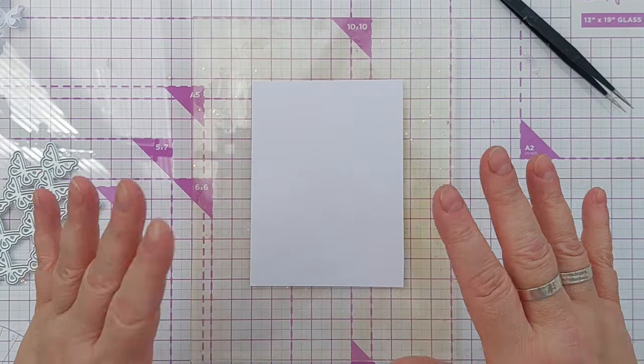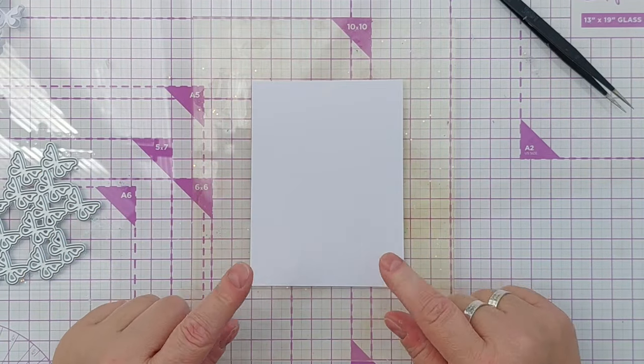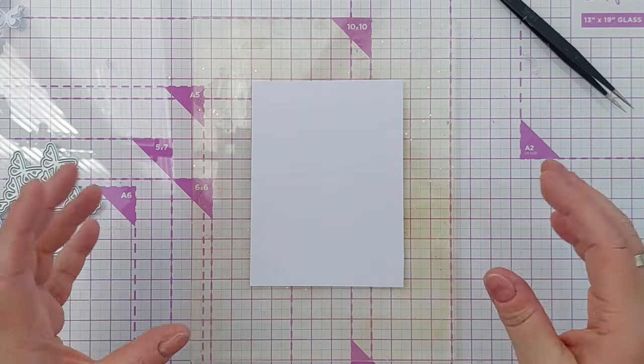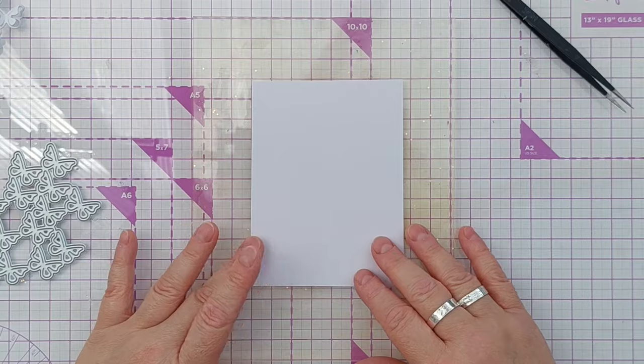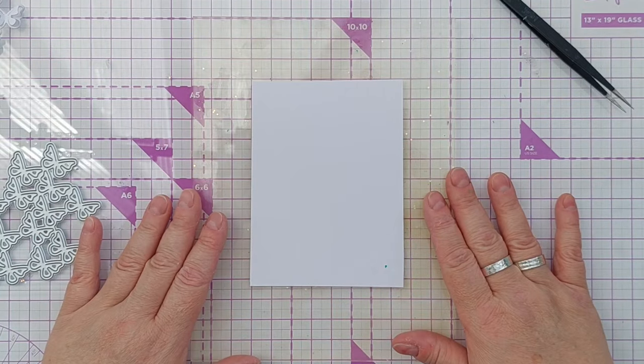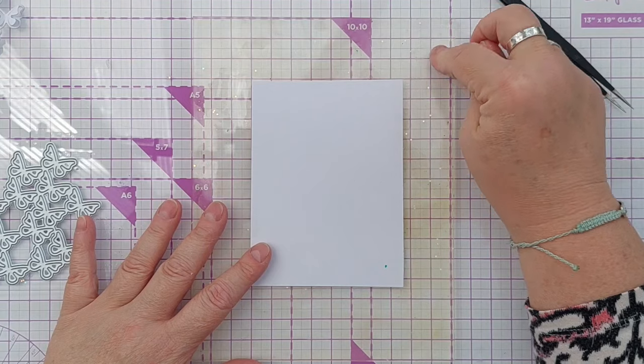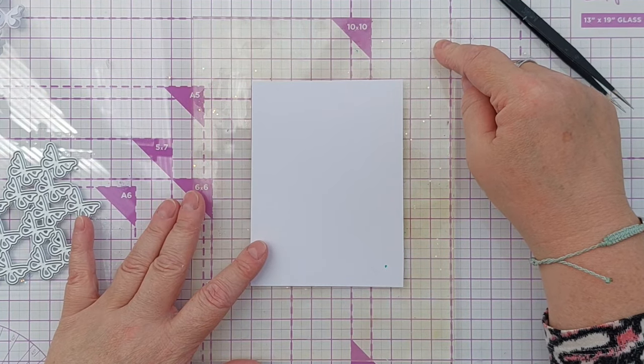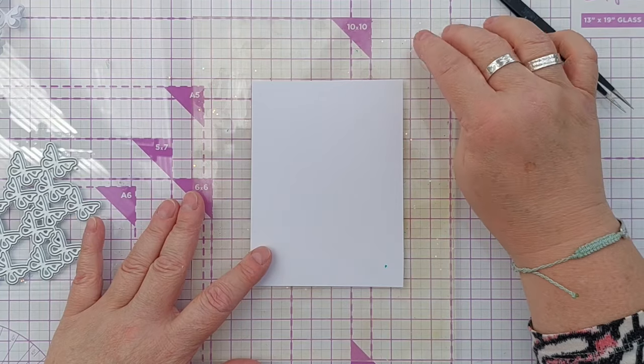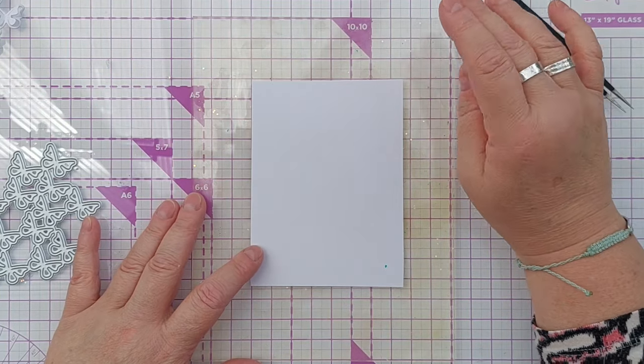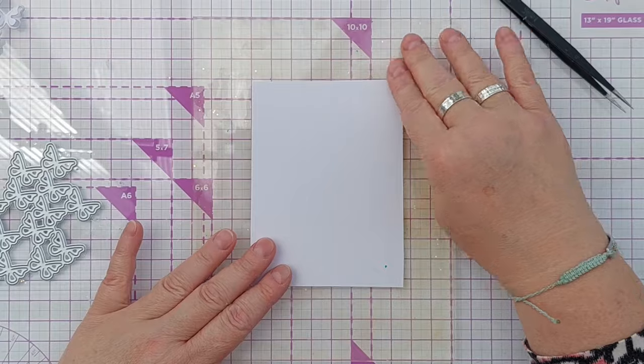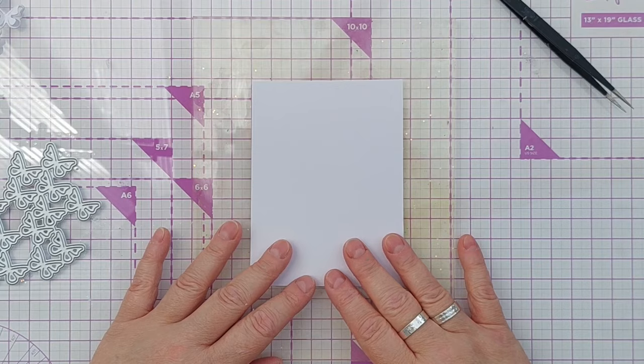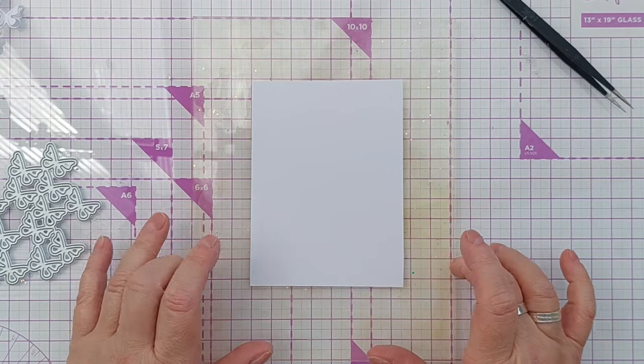It's the largest size but it's quite hard to get hold of in the UK and I believe Waffle Flower have now stopped making the big size because of manufacturing issues. So I had a rummage round on Amazon and I found some photopolymer grip mats that were very inexpensive, so I'm trying it out and if it performs as well as the Waffle Flower grip mat I'll let you know.